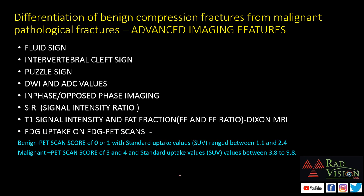Next we will see advanced imaging features helping to differentiate benign from malignant fractures: fluid sign, intervertebral cleft sign, puzzle sign, DWI and ADC values, in-phase or opposed-phase imaging, signal intensity ratio, T1 signal intensity and fat fraction on Dixon MRI, and FDG uptake. In benign fractures the PET score and SUV values are low, whereas in malignant fractures the PET score and SUV values are high.